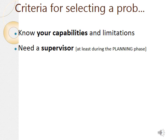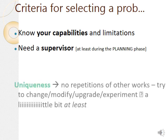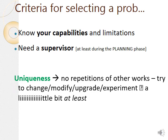Know your capabilities and limitations — this is important. If you don't know your strengths and weaknesses, you cannot move further. You also need a supervisor. Some young researchers try to work in groups without any supervisor, and they struggle and produce poor results. During the planning phase, engage more time with your supervisor, then update regularly to make it better.